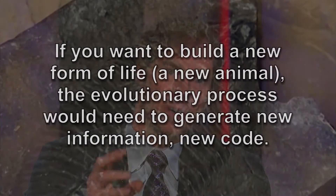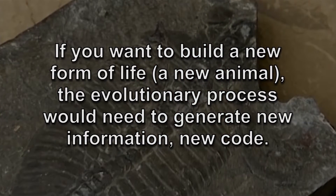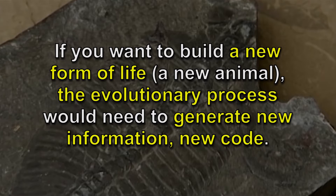It turns out that the same thing is true in life. If you want to build a new form of life from a simpler, preexisting form of life, you need new information — or rather, to put it more precisely, the evolutionary process would need to generate new information, new code.